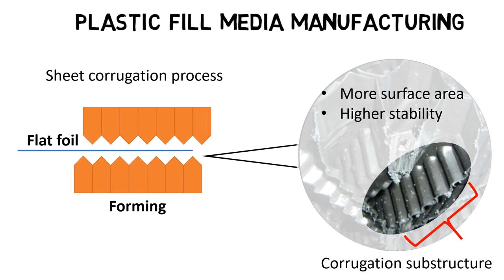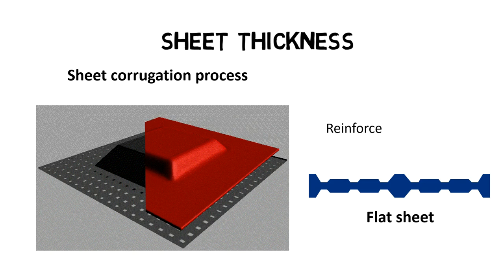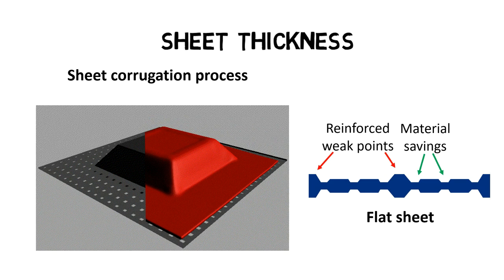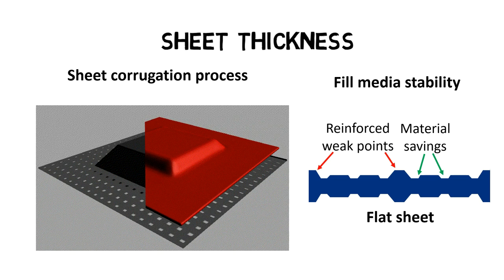When the corrugation is formed into flat sheets, their material thickness is changed as well. However, the material thickness change is not random. Instead, known weak points are reinforced with more material whereas other areas are thinned out to save material costs. Also, the overall sheet thickness of plastic fill media packings can be varied by using different flat sheets to optimize stability and material usage depending on the application.